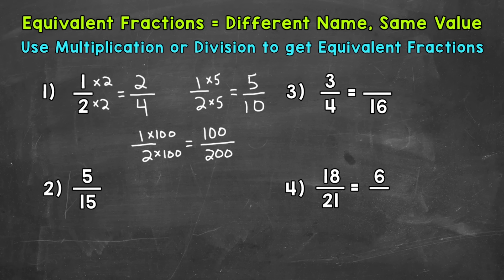To be clear, we can only use multiplication or division when it comes to equivalent fractions. Addition or subtraction will not give us an equivalent fraction, so keep that in mind. When it comes to equivalent fractions, we have an infinite amount for any given fraction, because we can multiply by anything — as long as we do it to both the numerator and denominator, we get an equivalent fraction. Division is a little more limited depending on the given fraction, but multiplication really opens up our possibilities.